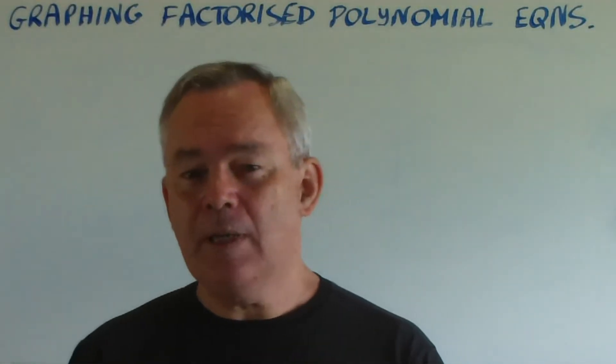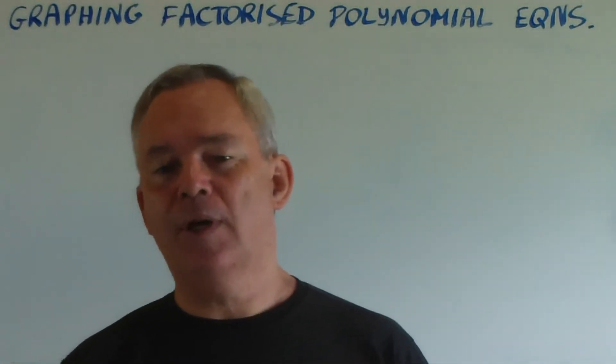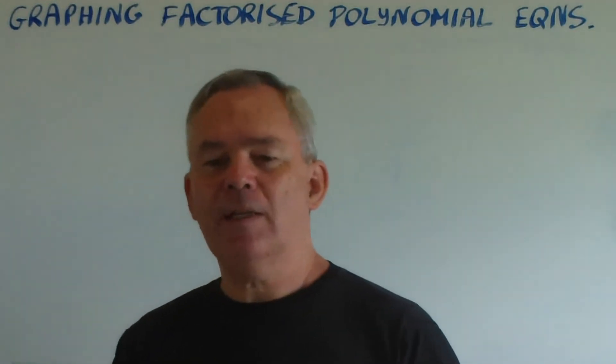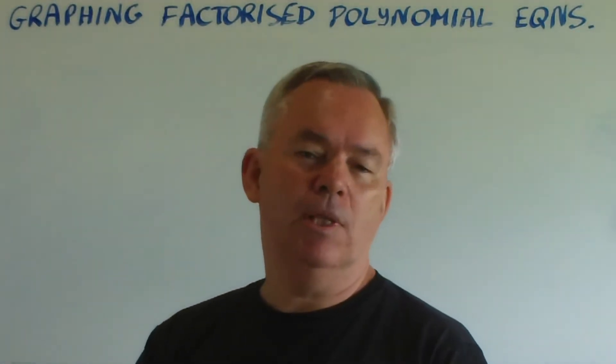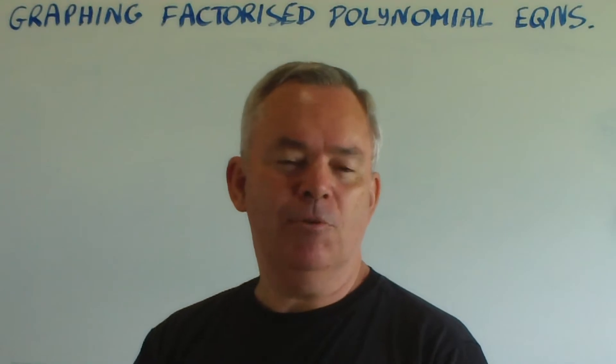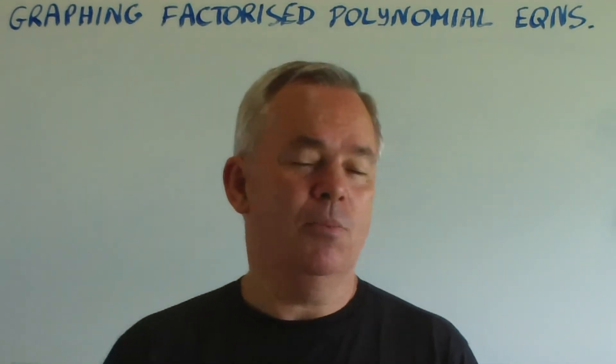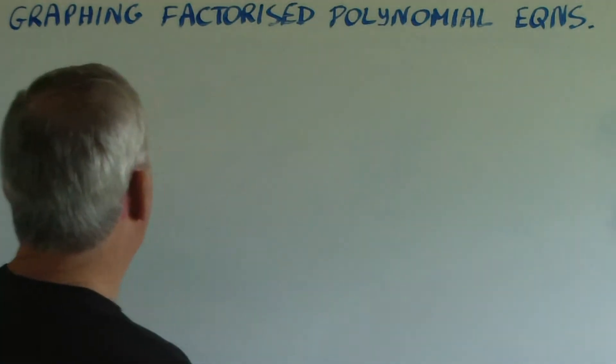What happens if you're graphing a factorized polynomial function and some of the factors appear more complex than you would like? Well, the simple fact is that it's not fully factorized. That may not be a problem, but let's look at an example.